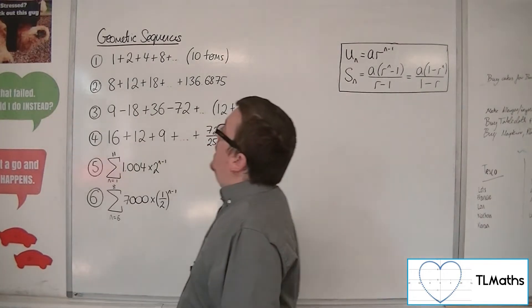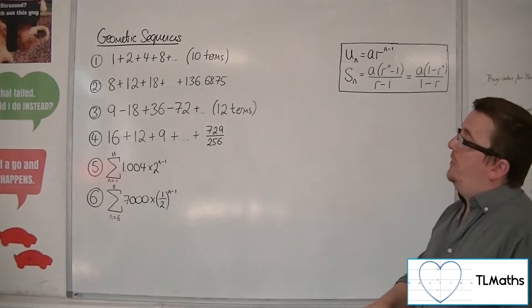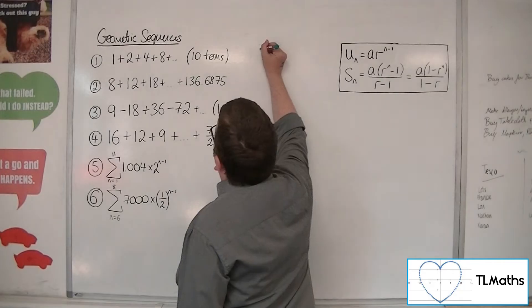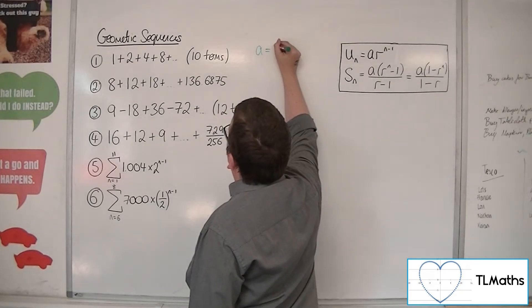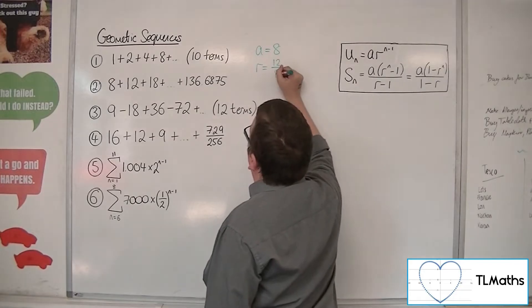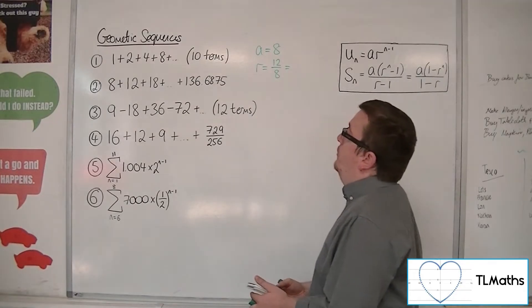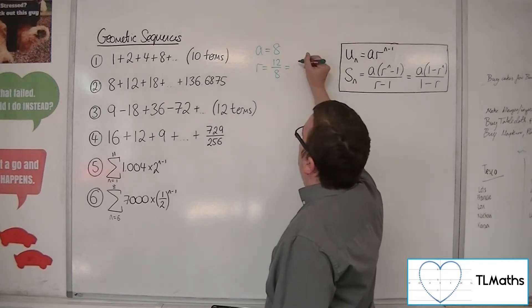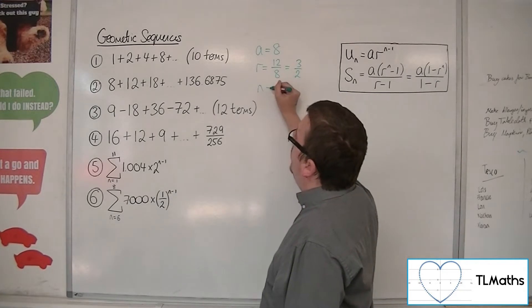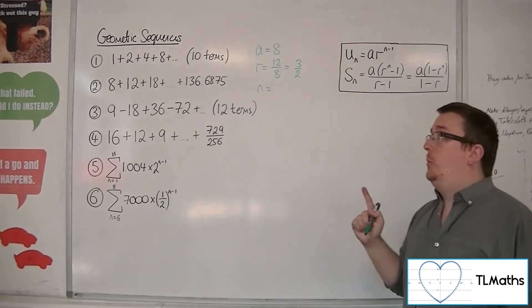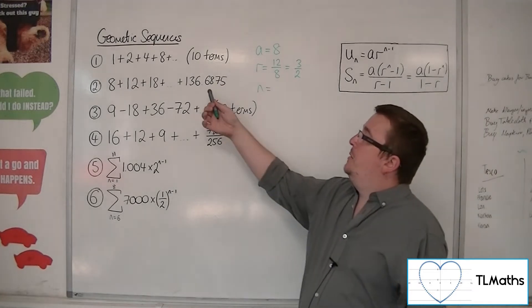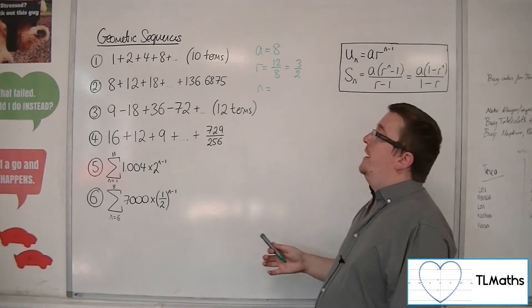So number two, we have 8 plus 12 plus 18 plus etc., up to 136.6875. Now, we can identify the first term, which is 8, the common ratio we can calculate using the second term divided by the first term, so 12 divided by 8, and that gets us 3 halves. The thing is, we don't know what n is, so we can't use one of these formulas directly, so we need to determine which n gives us that value.